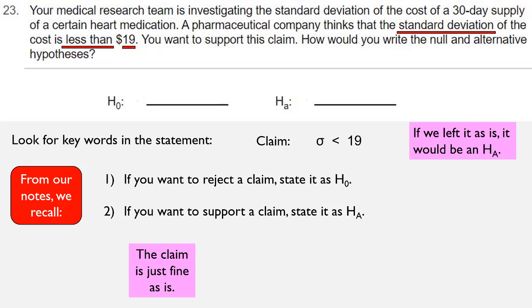So the claim is just fine as is. We don't have to make any adjustments to it because the sigma less than $19 would be an HA. And since we want to support this claim, that's how we would want to write it. We would want to write it as HA.